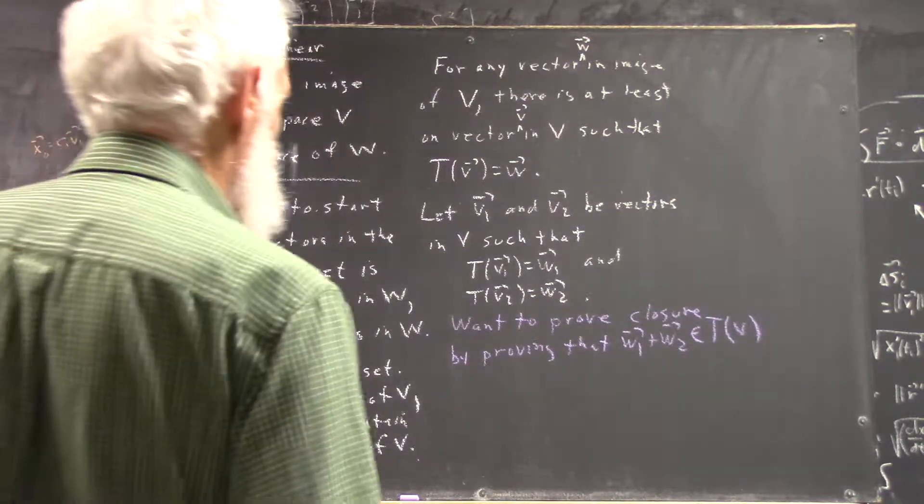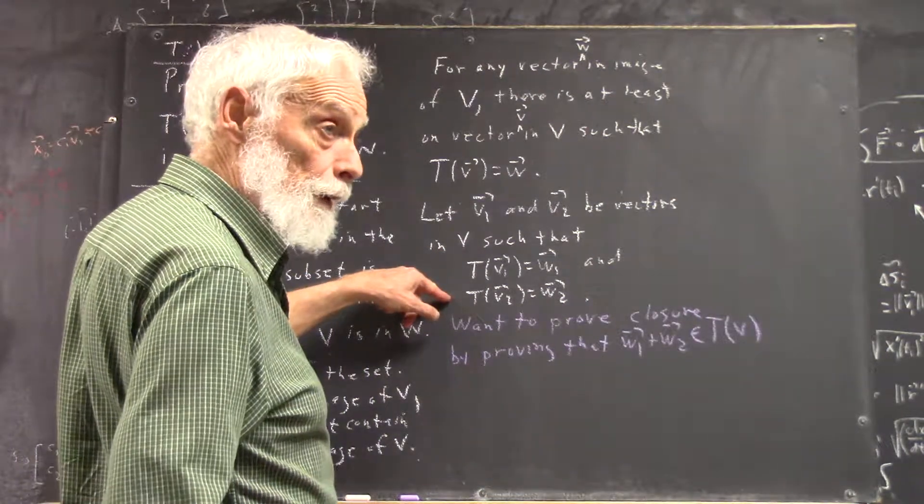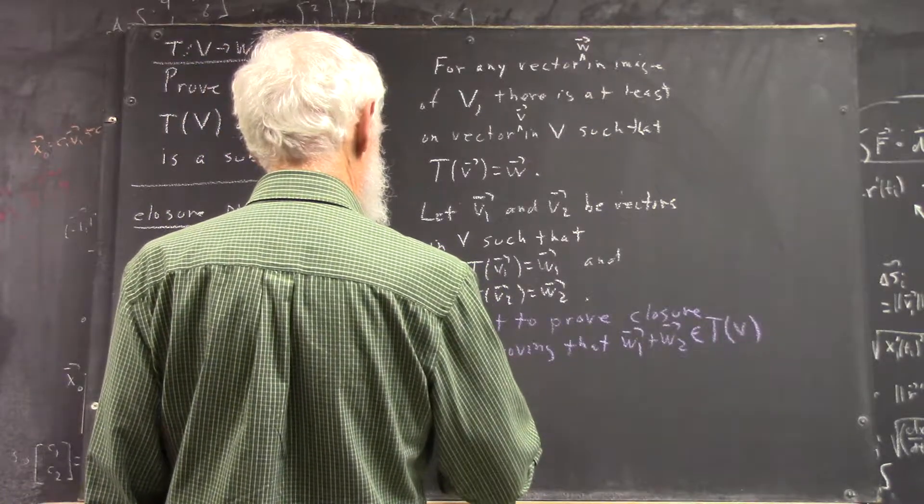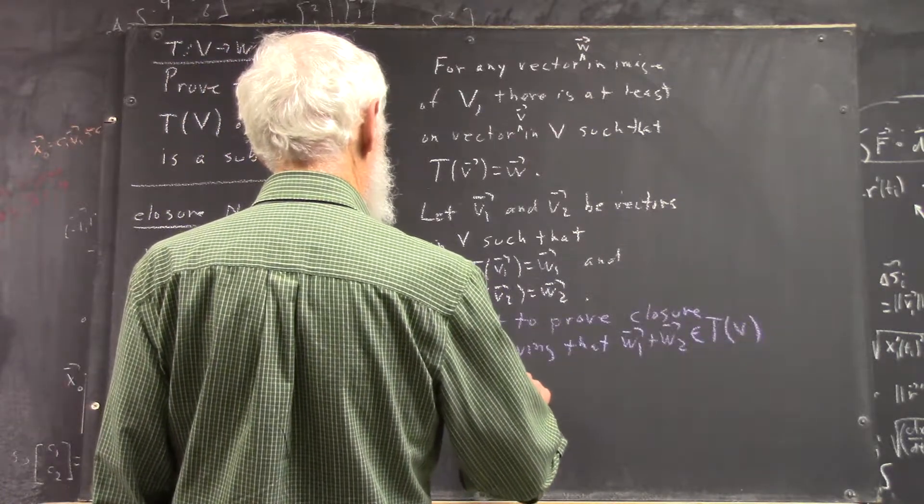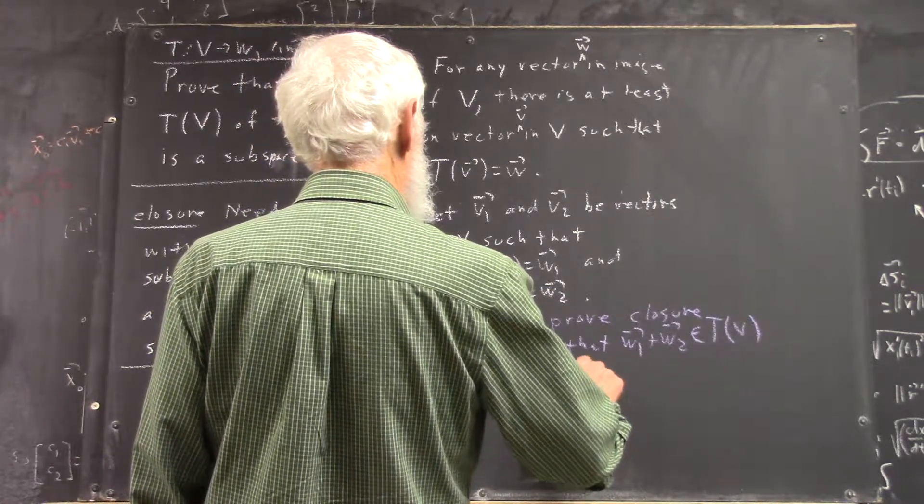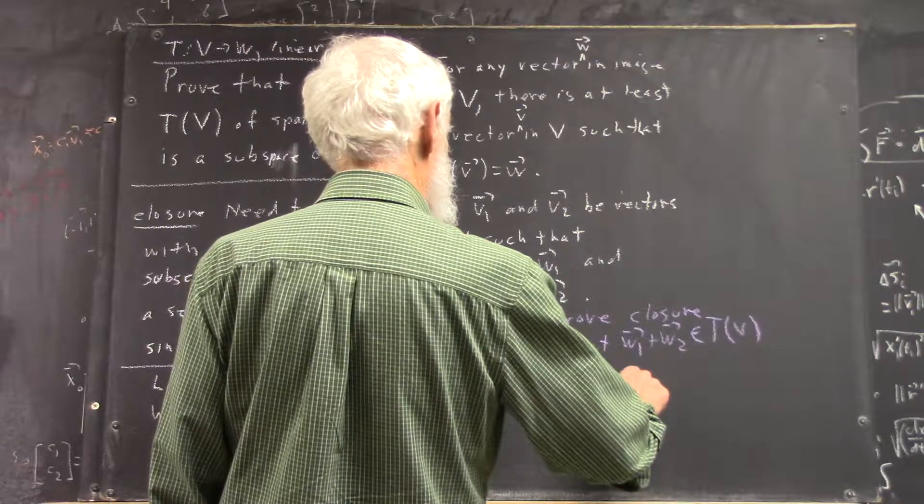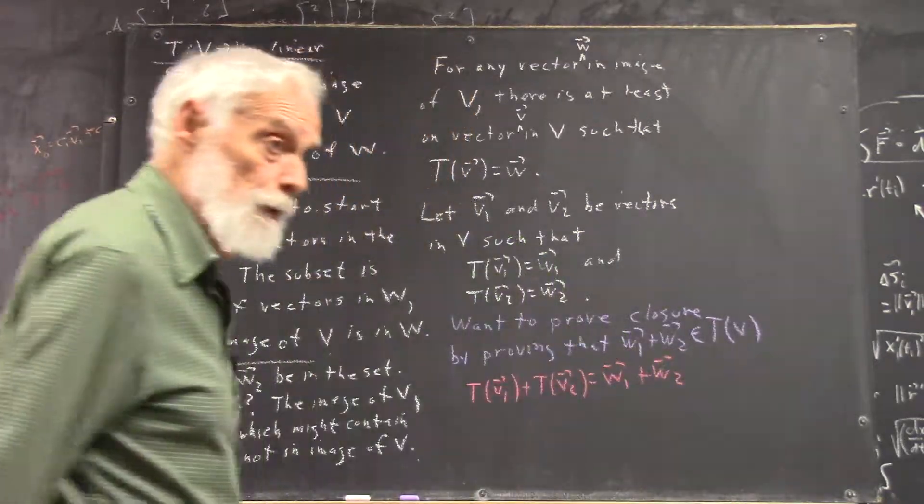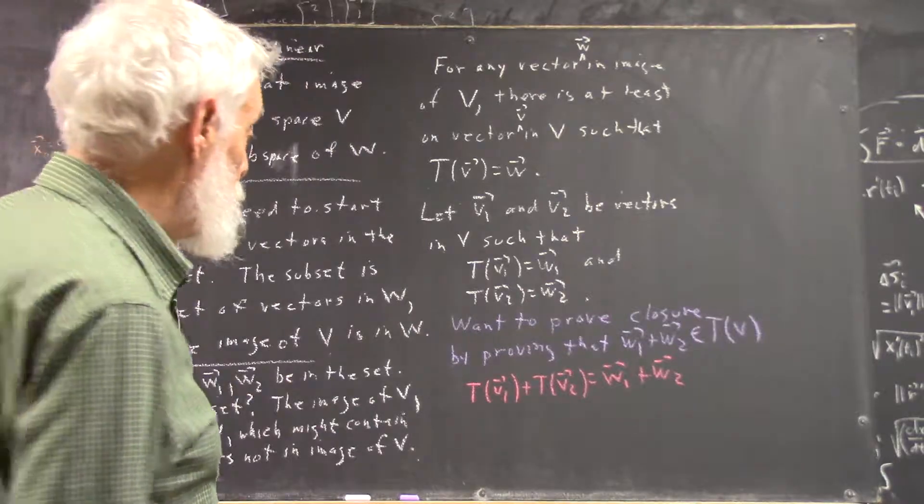Okay, so how do we prove this? Well, we have this and this, right? So we can write this down, clearly. Okay? By linearity.